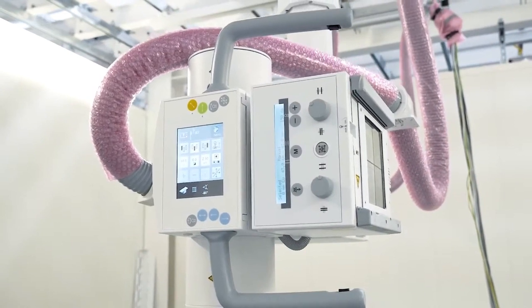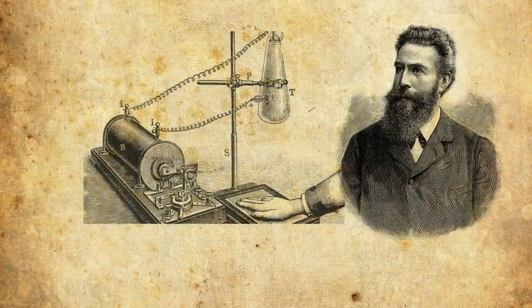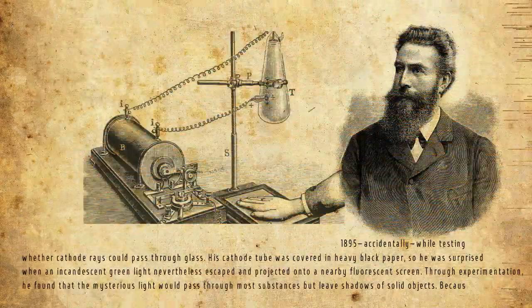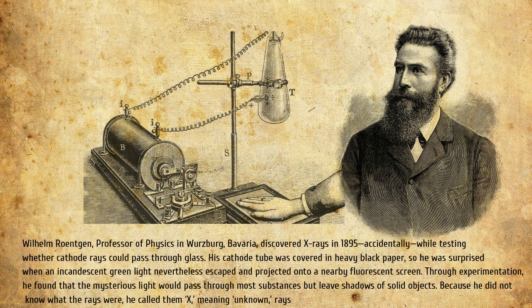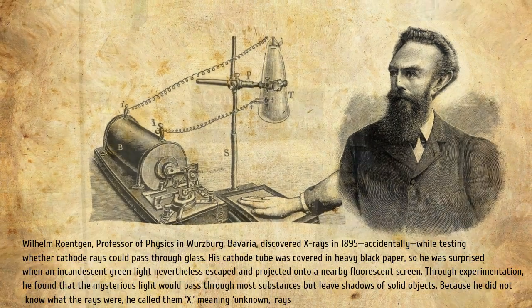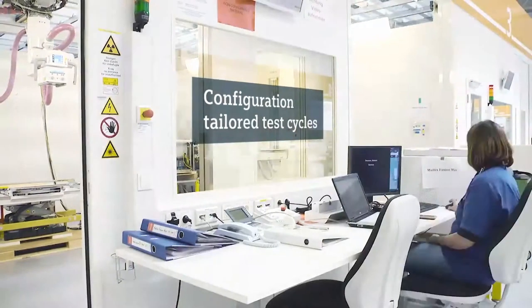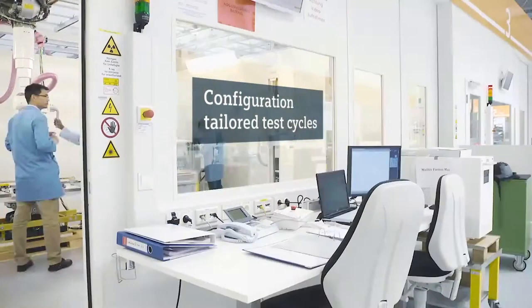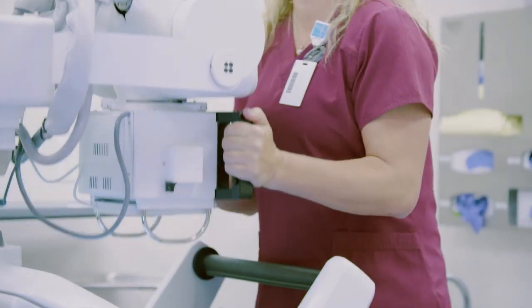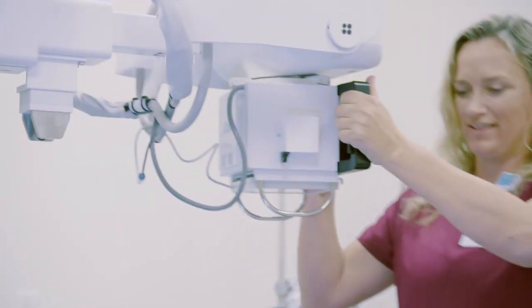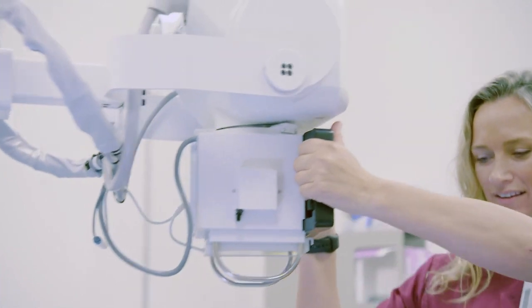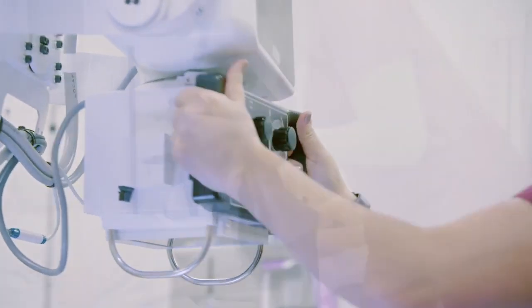On November 8, 1895, German physics professor Wilhelm Röntgen stumbled on x-rays while experimenting with Lennard tubes and Crookes tubes and began studying them. He wrote an initial report, 'On a New Kind of Ray: A Preliminary Communication,' and on December 28, 1895, submitted it to Würzburg's Physical Medical Society journal. This was the first paper written on x-rays. Röntgen referred to the radiation as X to indicate that it was an unknown type of radiation. The name stuck, although over Röntgen's great objections, many of his colleagues suggested calling them Röntgen rays.